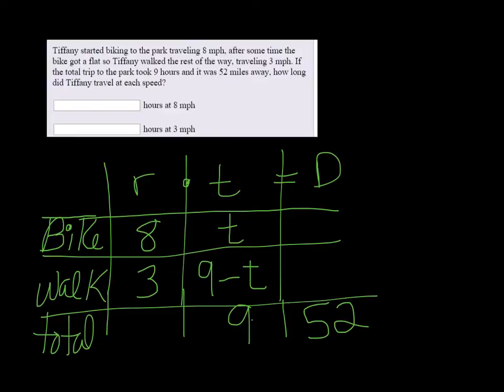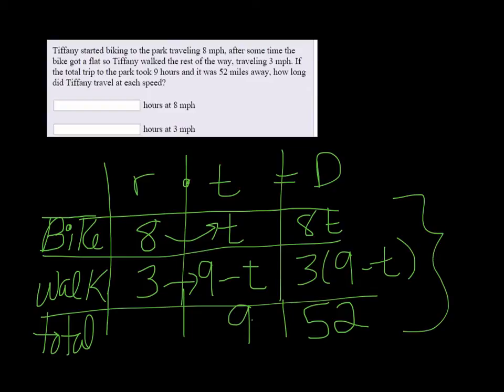To get distance you multiply the eight and the T together so we get 8T, and we multiply these two together and that's three times nine minus T. This last column is our equation. We're going to add these two up, these two rows, to get the last column.